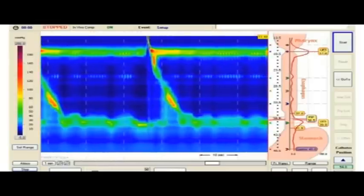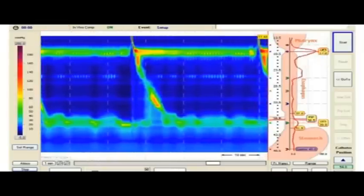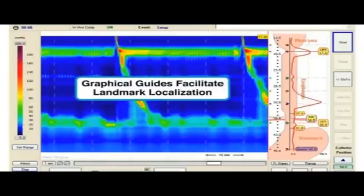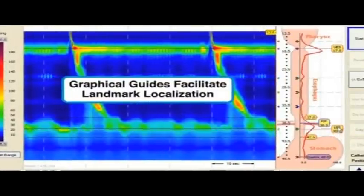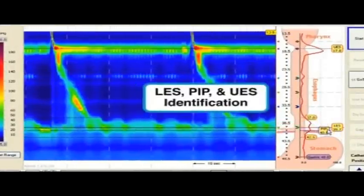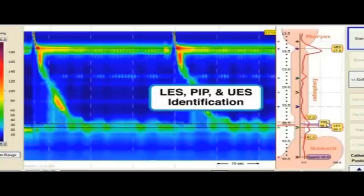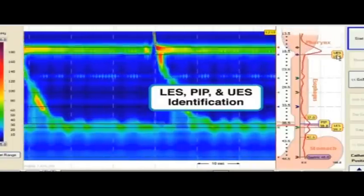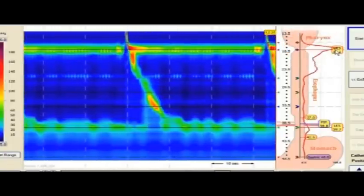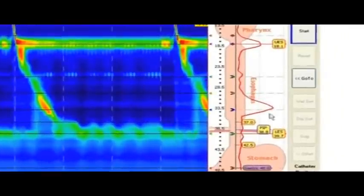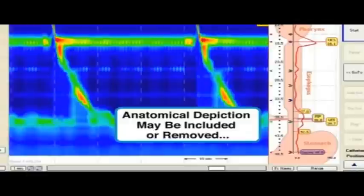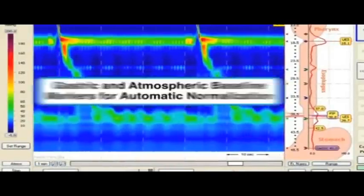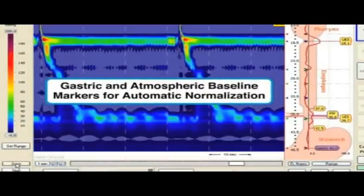ManoScan employs intuitive new tools to assist the procedure and data analysis. Graphical guides facilitate localization of anatomical landmarks. The LES, PIP, and UES are readily identified so that data may be analyzed at their true locations. A graphical depiction is available that superimposes pressure on the anatomy, and the data may be displayed relative to gastric or atmospheric baselines.